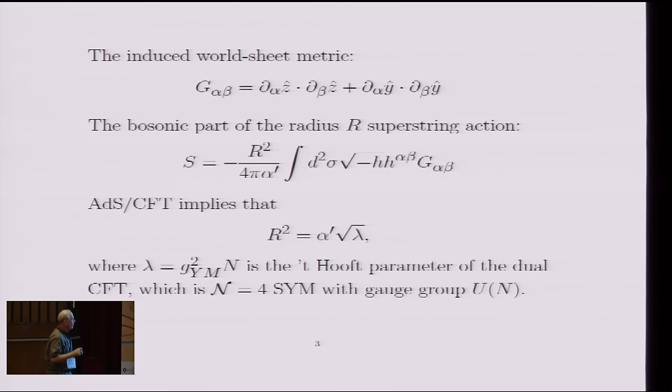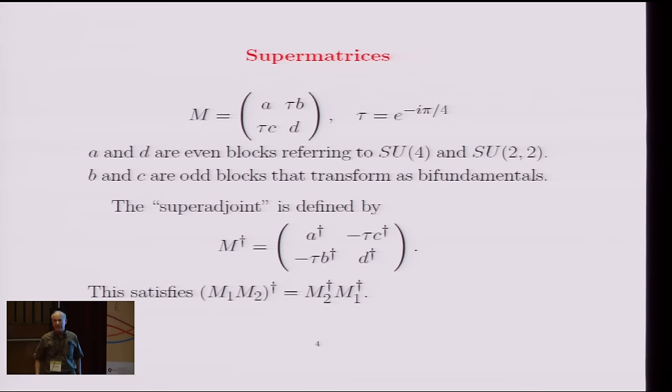And then one uses AdS-CFT to realize that R squared over alpha prime is just related to what would be the 't Hooft parameter in the dual Yang-Mills gauge theory. So all this is extremely well known. I'm just reminding you of things that are well known.